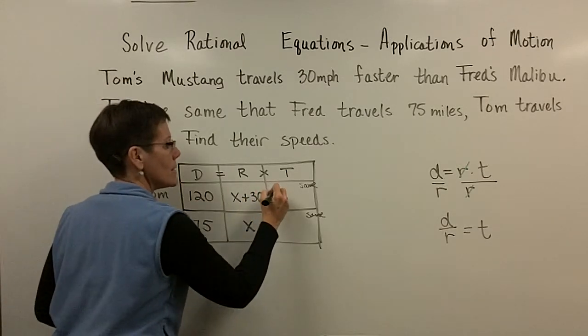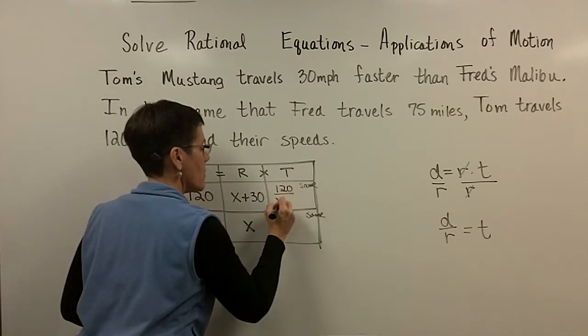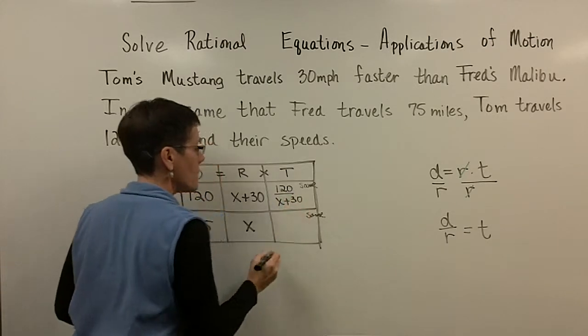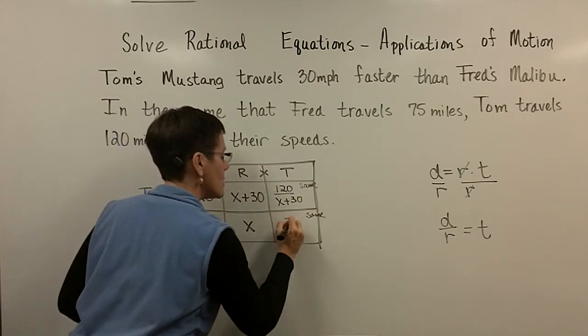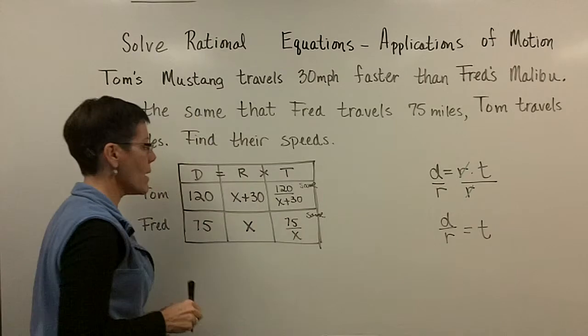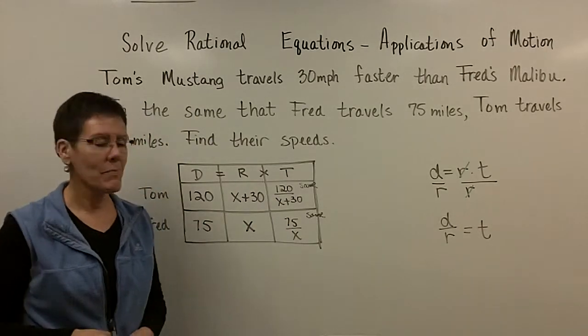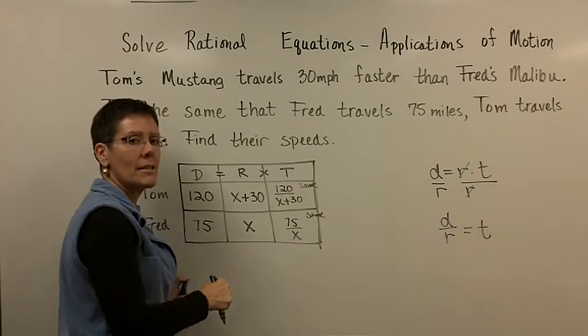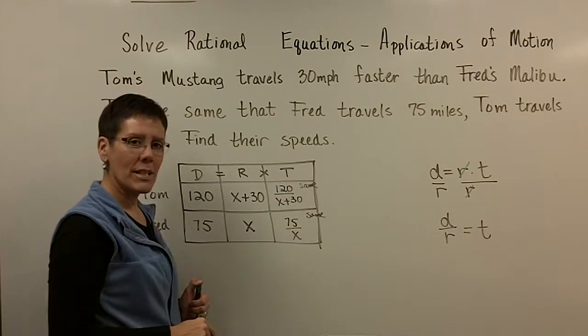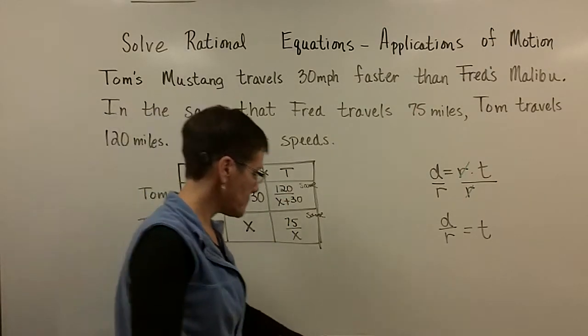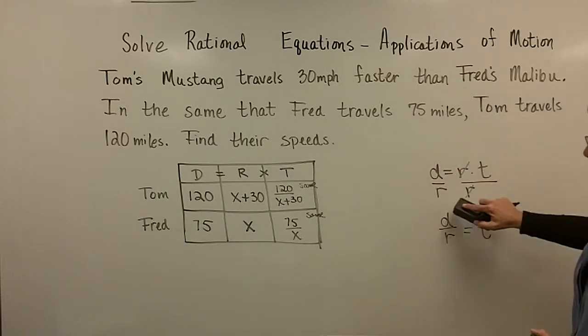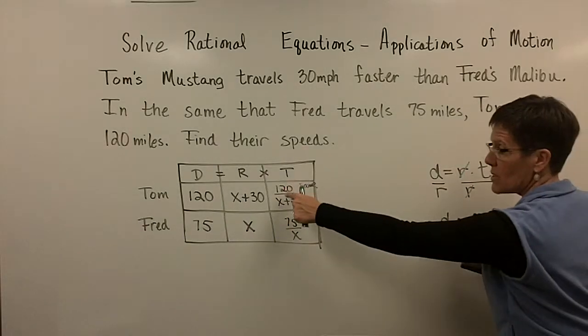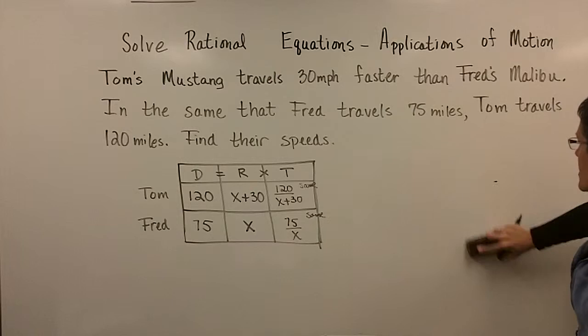I'm going to take my distance of 120 and divide it by my rate of x plus 30. And right here, I'm going to take my distance of 75 and divide that by my rate of x. Because these two happen in the same amount of time, I'm now going to set them equal to one another. So I'm going to get rid of this statement. I just need you to know why I put distance divided by rate in the spot for time.